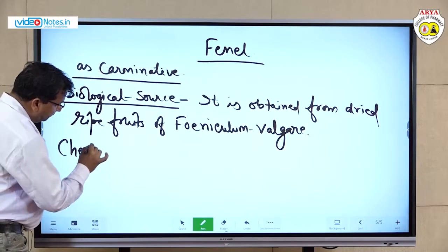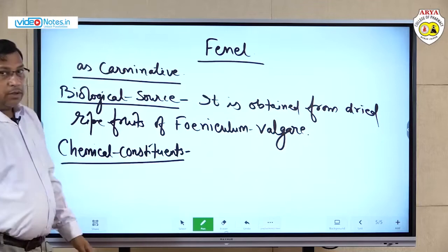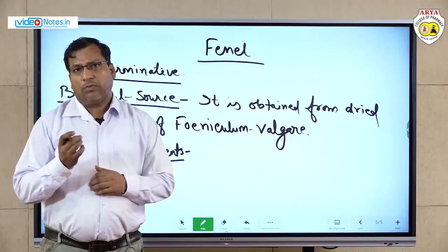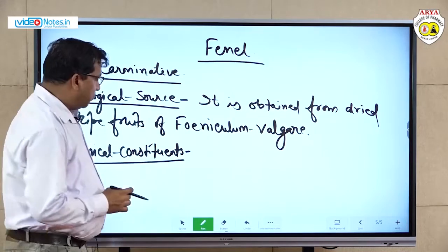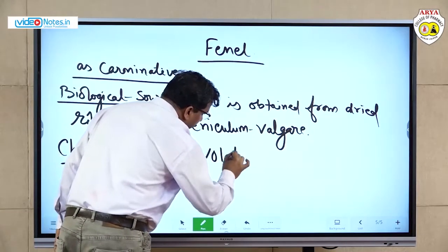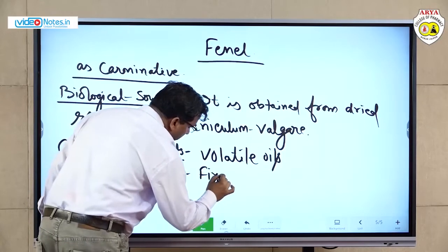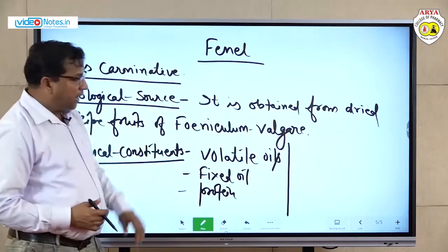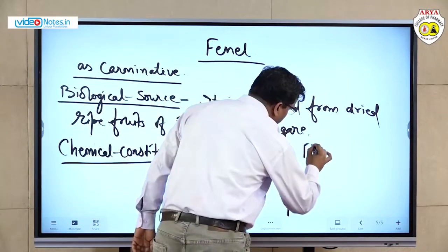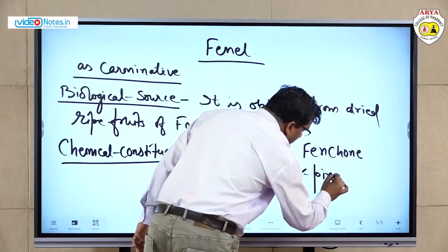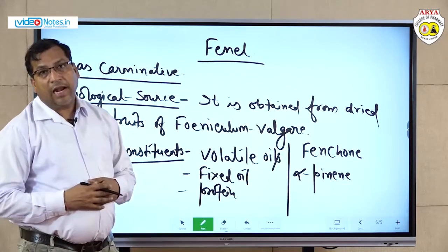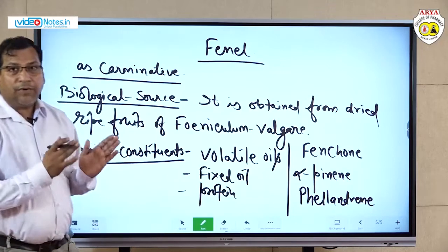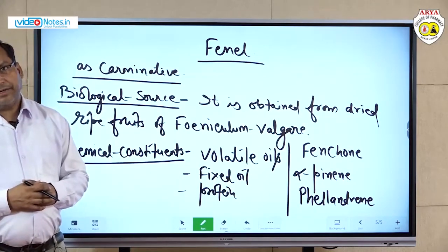Chemical constituents of fennel: fennel contains volatile oils (1–2%), fixed oils, and proteins. The specific volatile oil compounds include fenchone — very important — alpha-pinene, and phellandrene. These phytoconstituents act as a carminative.